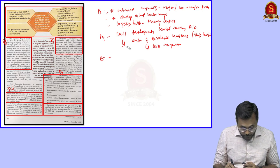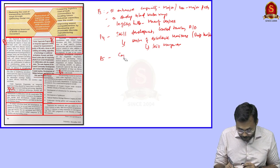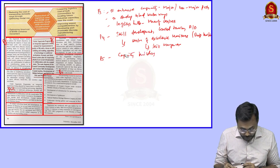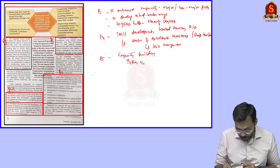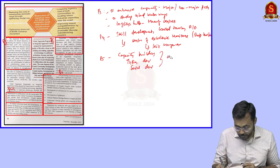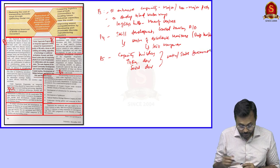Paragraph 5 focuses on capacity building, infrastructure development, and social development, which brings in the role of both Union and State governments under the Sagarmala project.